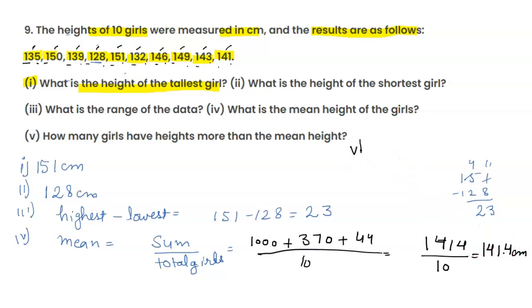Fifth है हमारे पास, how many girls have heights more than the mean height? Mean height से more कितनी girls की height है, तो 141 से ज्यादा 5 girls हैं.